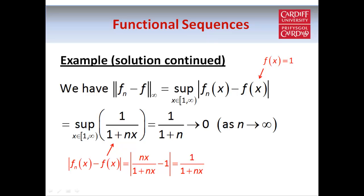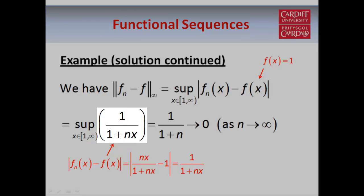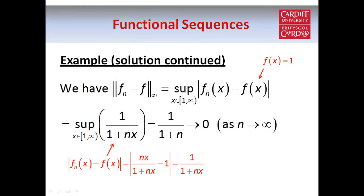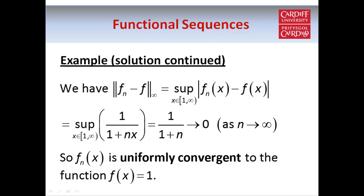Working out the modulus of fn(x) minus 1 simplifies to 1/(1 + nx). This expression becomes smaller as x becomes larger, so to maximize it we take the smallest value of x in our domain, which is 1. Thus the Chebyshev norm of fn minus f equals 1/(1 + n), which obviously tends to 0 as n tends to infinity. Therefore the sequence is uniformly convergent to f(x) = 1.